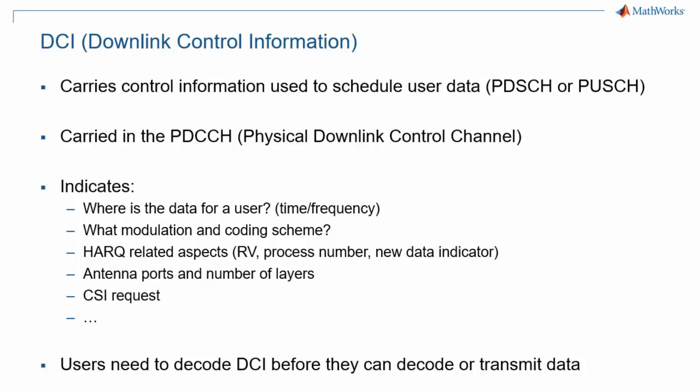Downlink Control Information, or DCI, carries control information used to schedule user data, PDCCH on the downlink and PUSCH on the uplink. It is carried by the PDCCH, or Physical Downlink Control Channel. It indicates the location in time and frequency of the data that is scheduled for transmission, the modulation and coding schemes used, the number of antenna ports or layers, as well as other aspects such as HARQ. The user equipment needs to decode the DCI before they can decode downlink data or transmit uplink data.